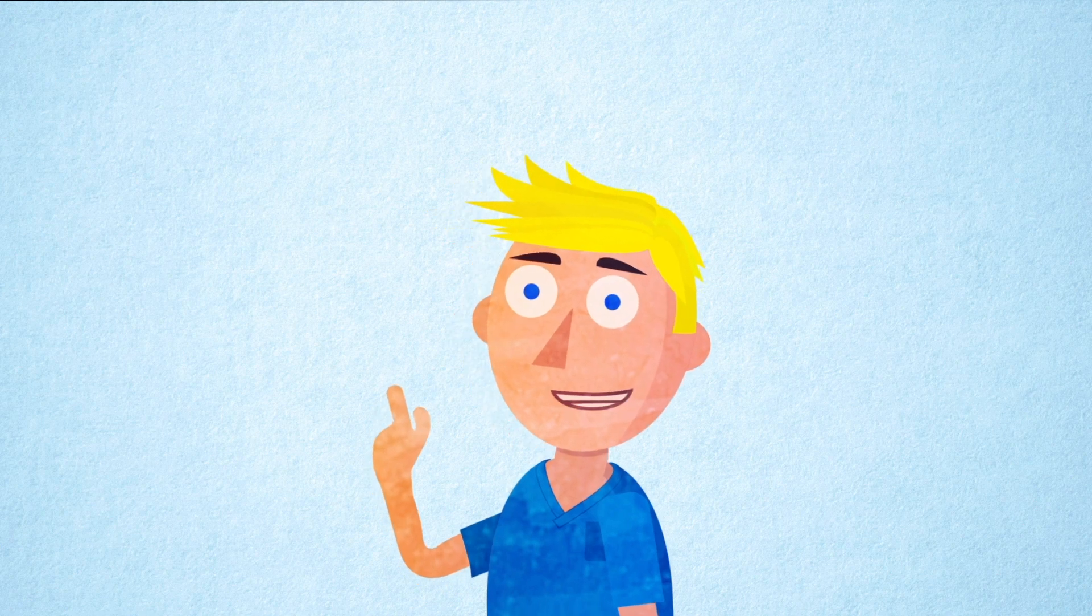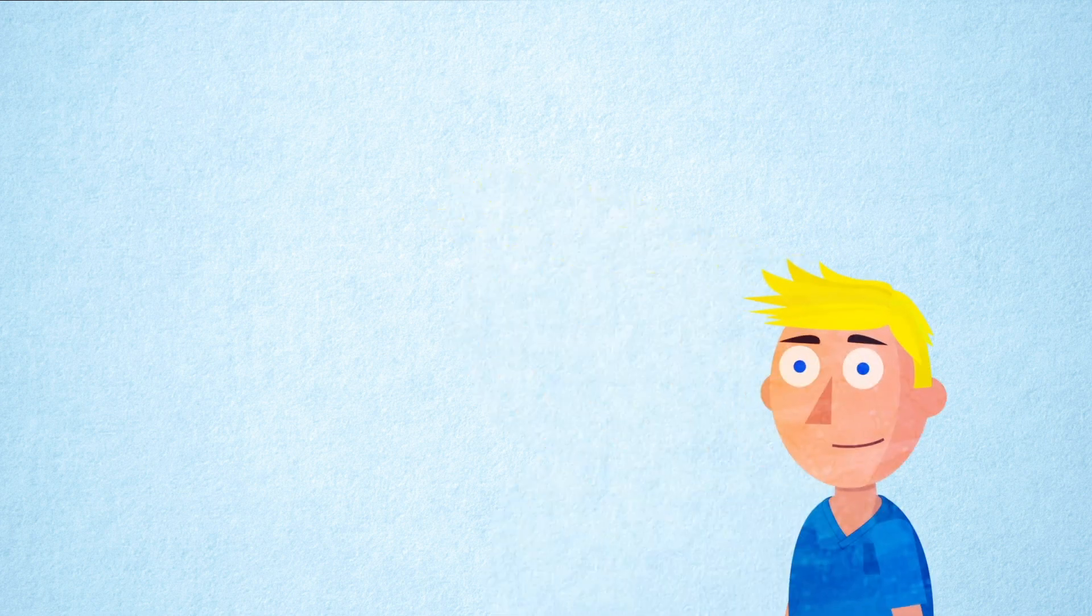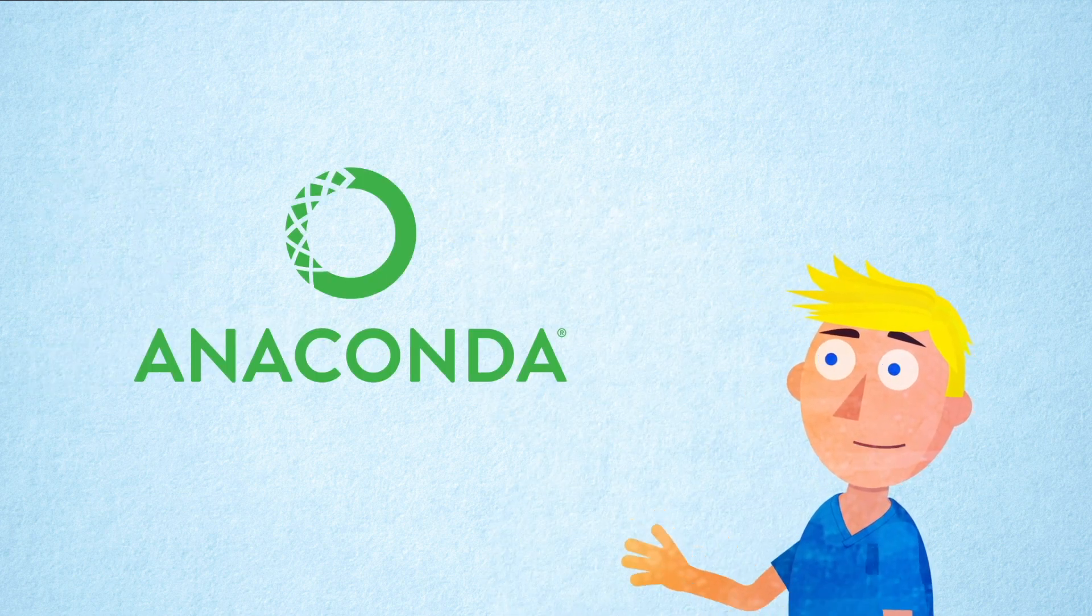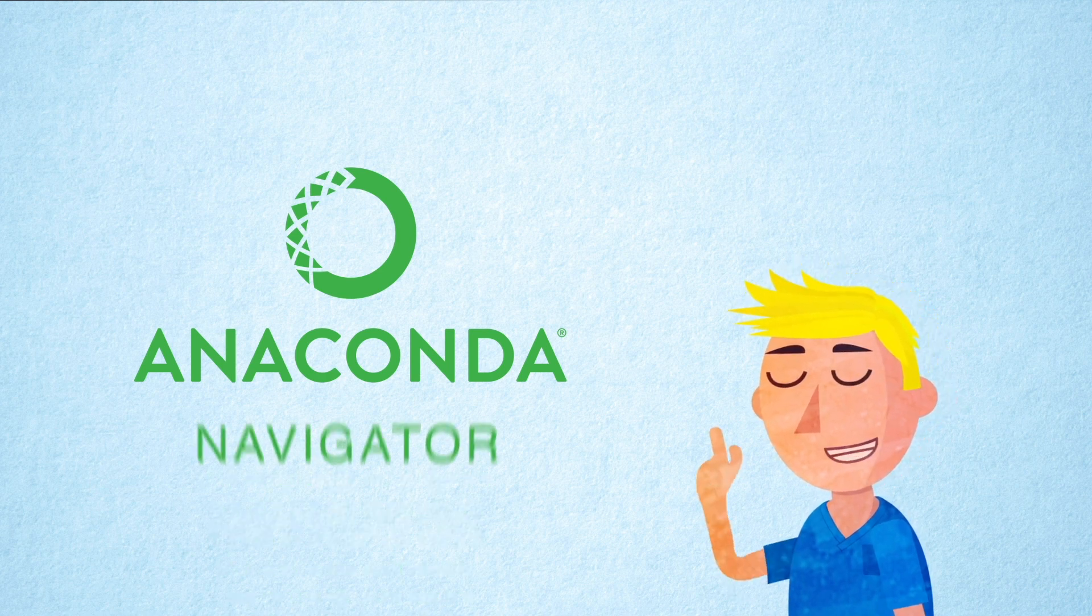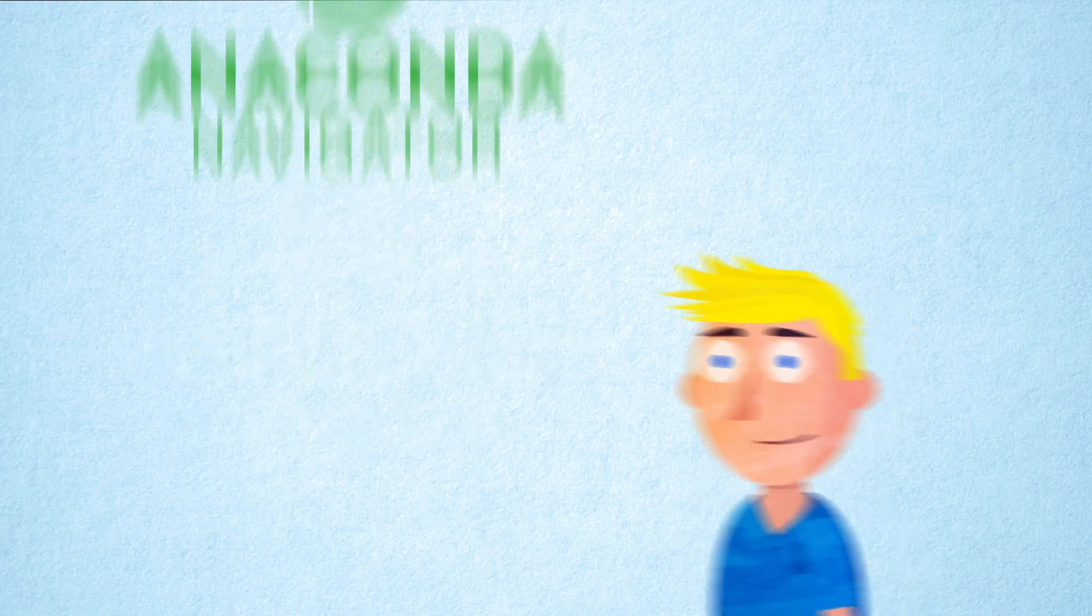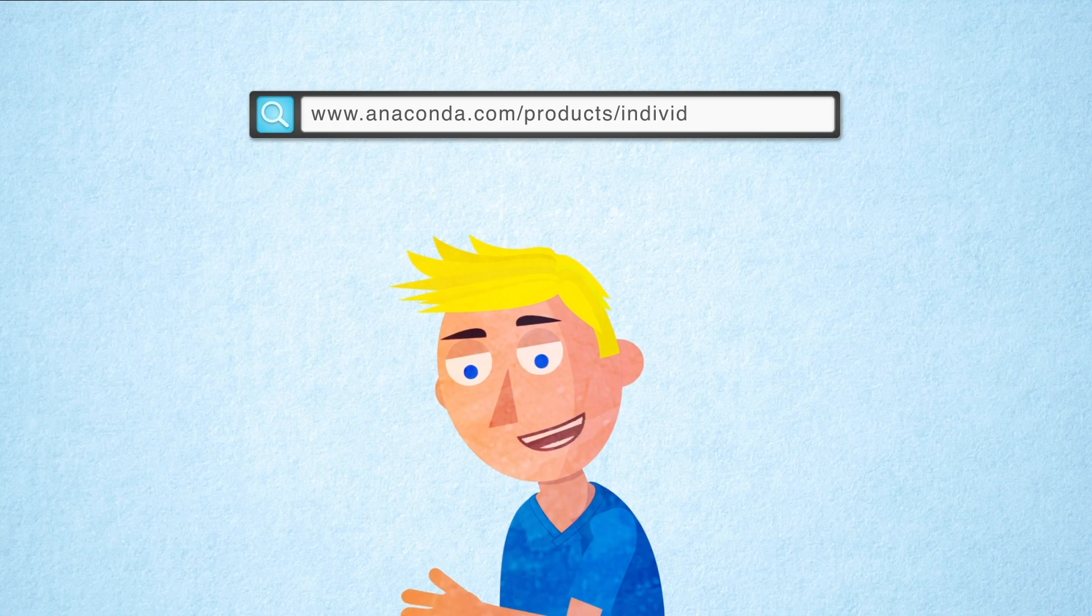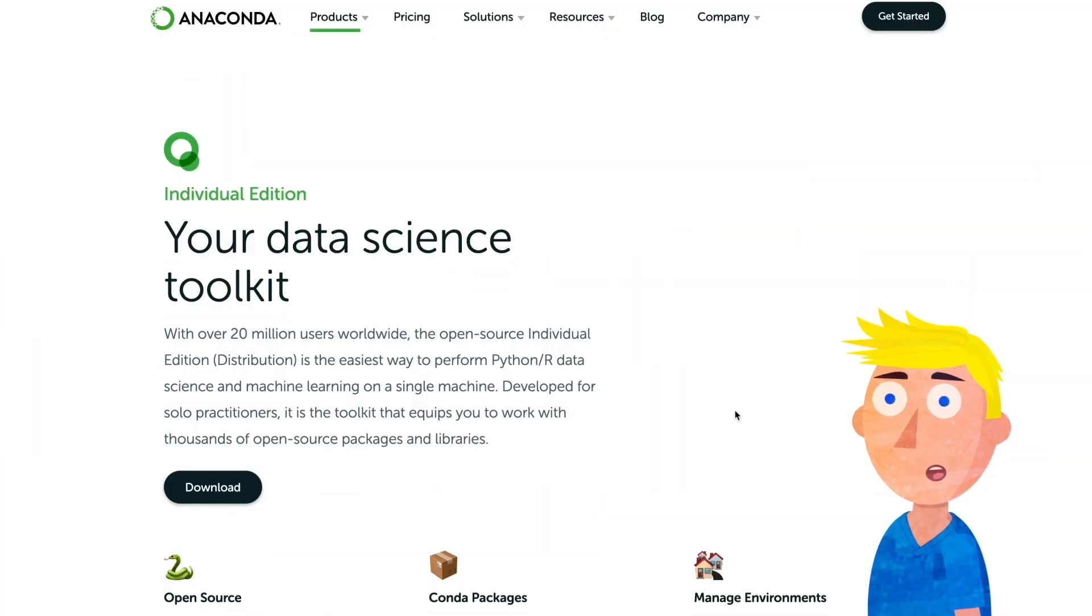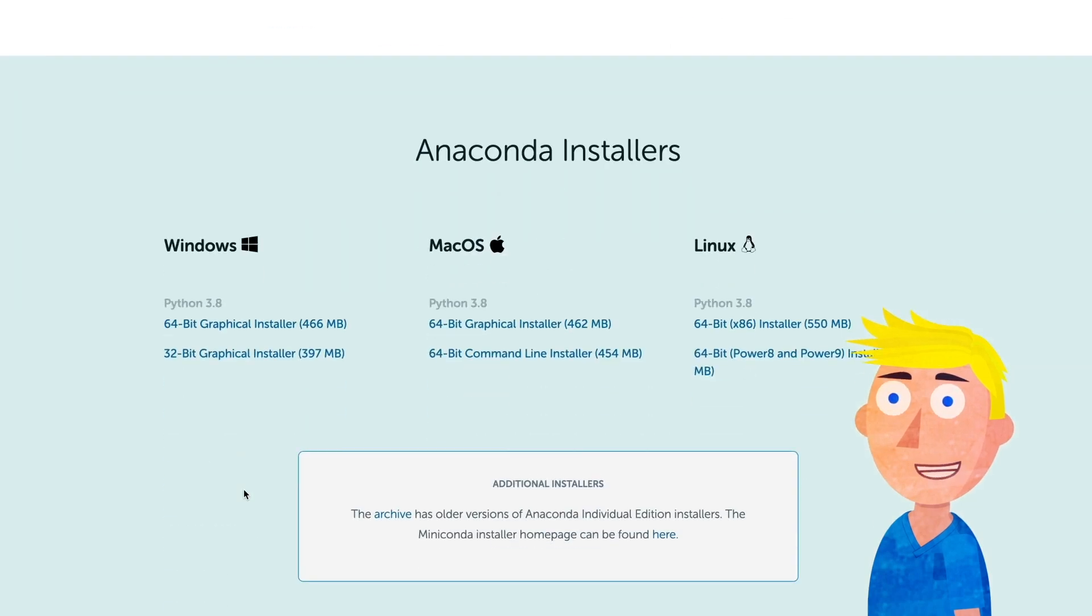First we need to download Python. As most of you I imagine are new to Python I highly recommend you download it using the Anaconda distribution. This will automatically download the latest Python release as well as lots of useful libraries for data science. It also gives you the Anaconda navigator which makes it much easier to work with Jupyter Notebooks. To do this head over to the Anaconda website. The link is in the description at the bottom of this video. Scroll down to the Anaconda installers and download the appropriate version depending on what operating system you're using and complete the installation process.